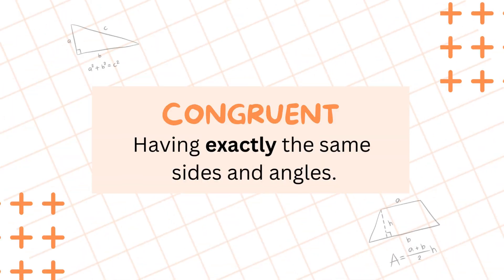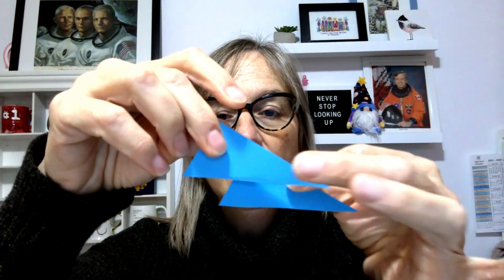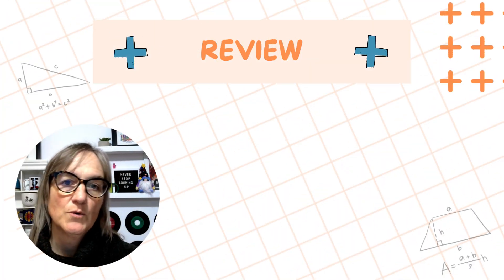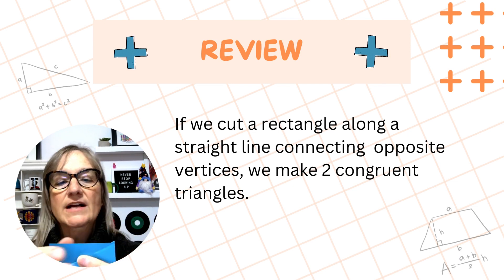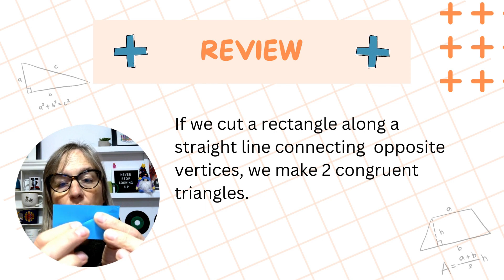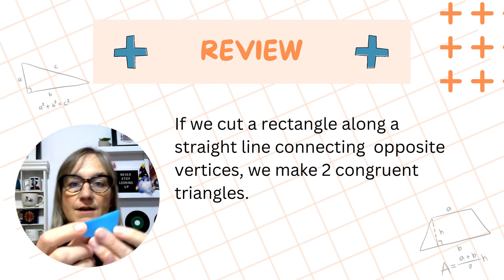Now, are these two triangles congruent? Remember that congruent means exactly the same sides and angles. Did you say yes, the triangles are congruent? If so, that's the correct answer. But you might be asking yourself: how does she know that's the correct answer? I didn't see her use a ruler to measure the sides or a protractor to measure the angles. Well, I used a little trick. Because congruent shapes are identical in every way, you can tell if they're congruent by placing one on top of the other. If they fit exactly, they are congruent. So if we take a rectangle and cut it in half along a line joining the opposite corners, we get two identical or congruent right triangles.